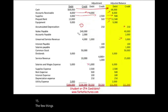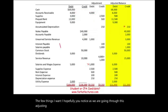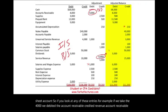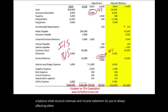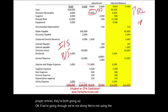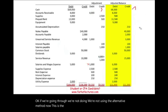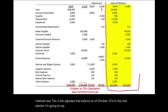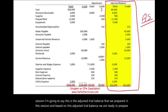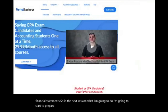One important observation: adjusting entries always affect an income statement account and a balance sheet account. For example, when we debited accounts receivable and credited revenue — accounts receivable is a balance sheet account and revenue is an income statement account. You are always increasing either a revenue or an expense. This is the adjusted trial balance as of October 31st, 2024. In the next session, we will use this adjusted trial balance to prepare our financial statements.